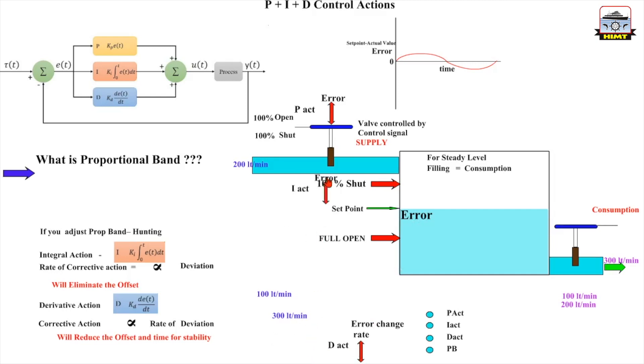Then to remove the offset, I have the integral action. The whole idea of this integral action is to remove the offset. And to make sure that the stability point is reached earlier, the level doesn't fluctuate too much, I have the derivative action also.